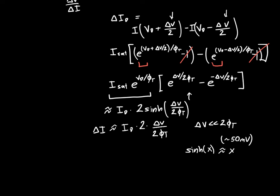Works the same exact way as sine, which is one of the reasons they called this function sinh, just because it behaves so similarly in a lot of ways. It's really appropriate. If we cancel the twos we'll get this is just equal to Id times delta V over φt.